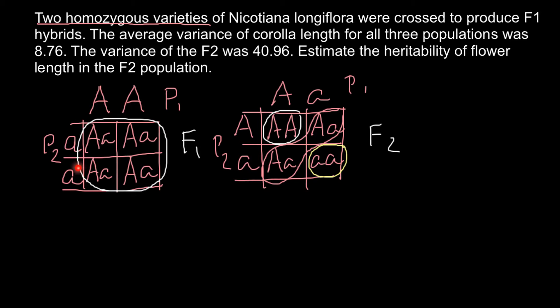This means all the variation in the F1 generation is due only to environmental factors. In the F2 generation, we expect two sources of variation: genetic variance and variance due to environmental factors. The key formula is: variance total equals variance genetic plus variance environmental.